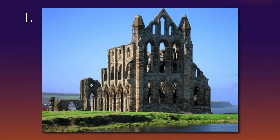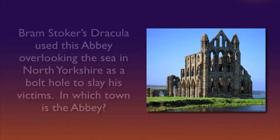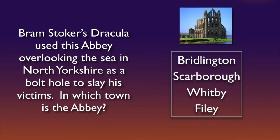Question number one. Study this picture. Here's the question: Bram Stoker's Dracula used this abbey overlooking the sea in North Yorkshire as a bolt hole to slay his victims. In which town is the abbey?